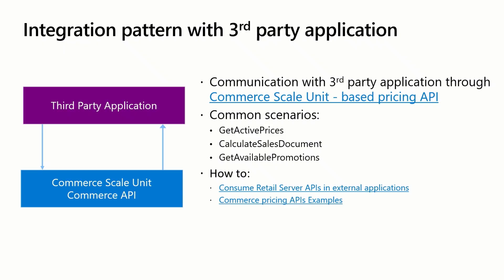For integrating unified pricing with third party applications, it is recommended to take advantage of the Commerce Scale Unit and its pricing API. This opens support for various pricing scenarios at scale, allowing third party services like applications or point of sale systems to retrieve pricing information while reducing dependency on the back office environment. Available APIs include: Get Active Prices, which gets a product's calculated price including simple discounts; Calculate Sales Document, which calculates prices and gets discounts for products at given quantities if bought together; and Get Available Promotions, which gets applicable discounts for products in the cart. More details can be found in the public documentation on Microsoft Learn.